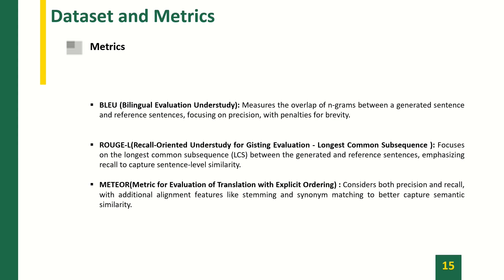BLEU (Bilingual Evaluation Understudy) measures the overlap of n-grams between a generated sentence and reference sentences, focusing on precision with penalties for brevity. ROUGE-L (Recall-Oriented Understudy for Gisting Evaluation — Longest Common Subsequence) focuses on the longest common subsequence between the generated and reference sentences, emphasizing recall to capture sentence-level similarity. METEOR (Metric for Evaluation of Translation with Explicit ORdering) considers both precision and recall with additional alignment features like stemming and synonym matching to better capture semantic similarity.